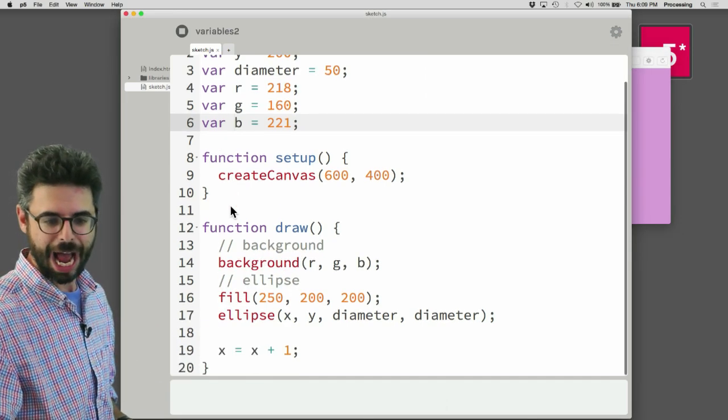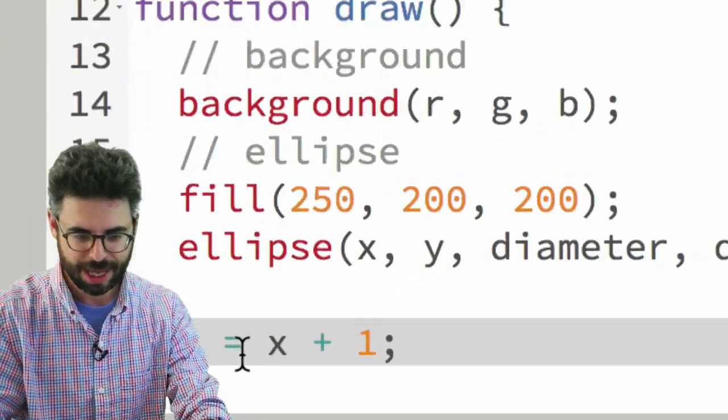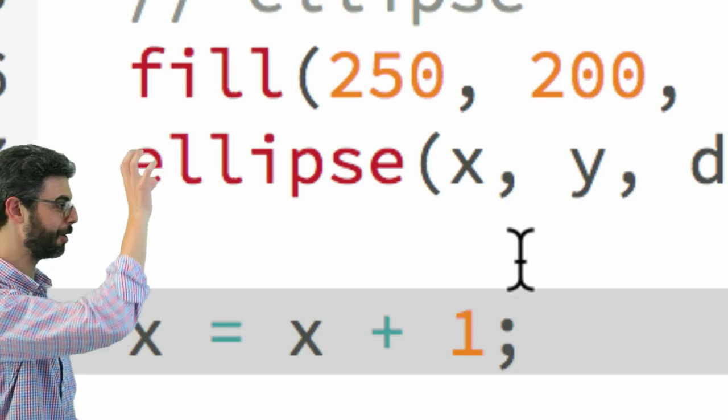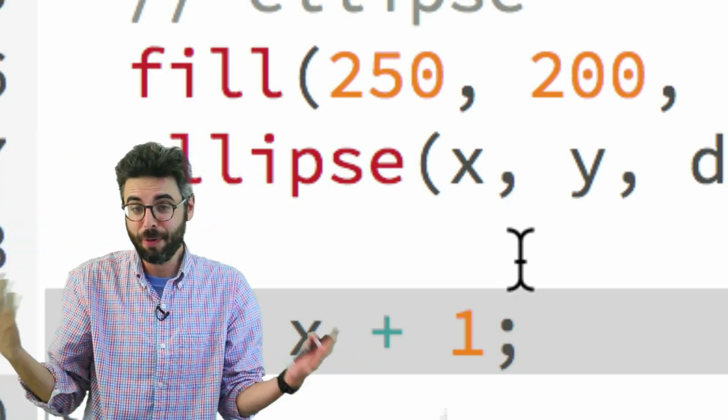And you can see here, how did I do that? There's an incrementation operation right down here that every time through draw, X goes up by one. So first the circle's here, then it goes up by one. Then it's here, then it's here, then it's here. So that's how you move something on the screen.